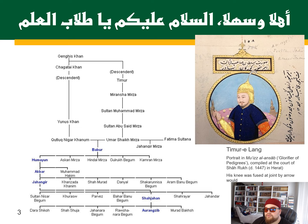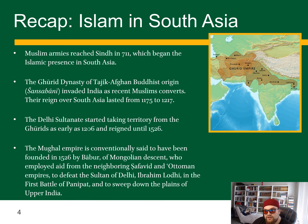We had talked about Tamerlane already, but I thought this was another cool picture — another way to show how he fits into all this, himself being a descendant of Genghis Khan and Babur also being a descendant of Timur. I want to briefly talk about Islam in South Asia, because before the Mughal period, the history is often glossed over.